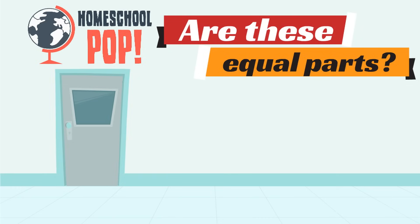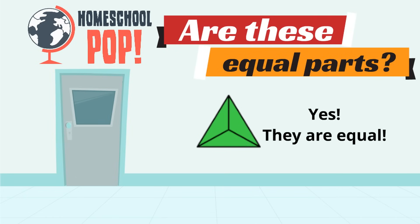Let's give this triangle picture a try. How many parts does this picture show? Three. And are these equal parts? Yes, they're equal parts because they are all the same size. Equal parts means each part is the same size.